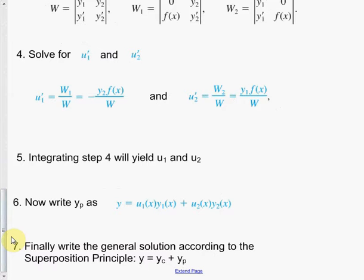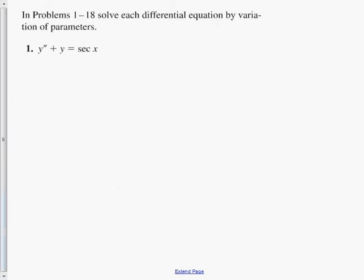Once we have u₁ and u₂, y_p = u₁·y₁ + u₂·y₂. By the superposition principle, the general solution is y = y_c + y_p. We've been building to this since section 4.1. Once you work two or three problems, you follow the same steps every time. Let's take this first problem.